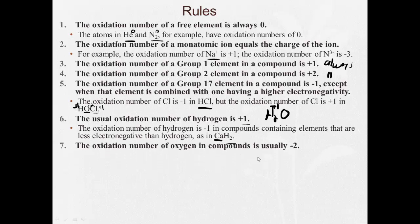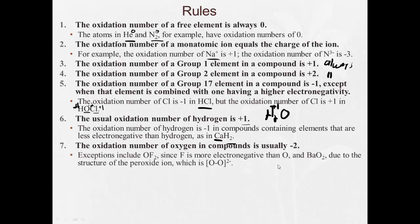The oxidation number of oxygen in compounds is usually, and by usually we mean almost always, minus two. A couple of exceptions. OF2, since fluorine is more electronegative than oxygen, here the oxygen would be plus two. And if you saw something like BaO2, well we know Ba is two plus, and in this case there's two oxygens, so each of them would actually have to be a minus one.